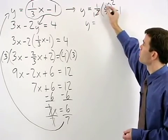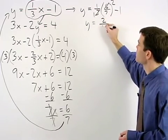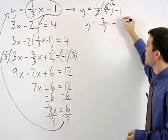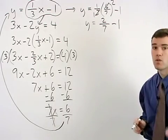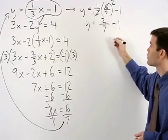We have 1 times 2 which is 2 and 1 times 7 which is 7. So y equals 2 sevenths minus 1 which can be thought of as y equals 2 sevenths minus 1 over 1.